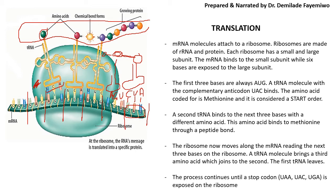Something important to know is that translation always starts with a triplet codon of AUG. AUG codes for methionine, and methionine simply means start. There are also three stop codons, which are UAA, UAC, and UGA.